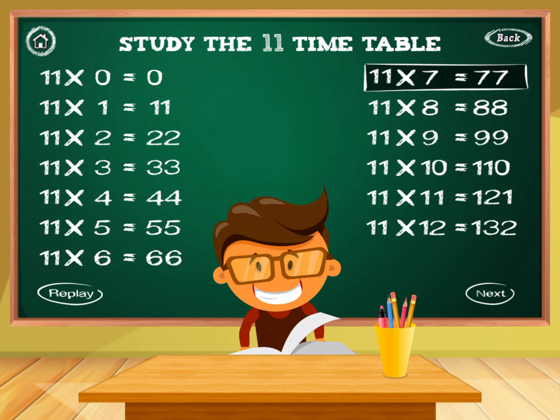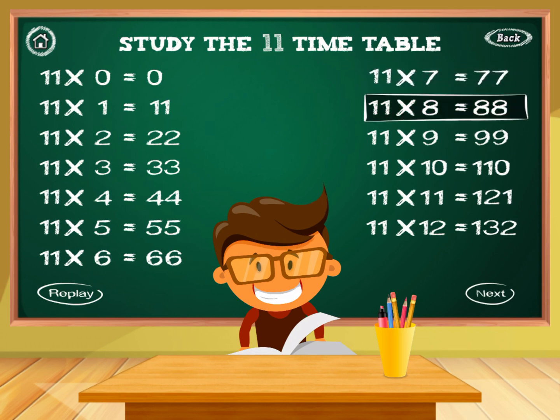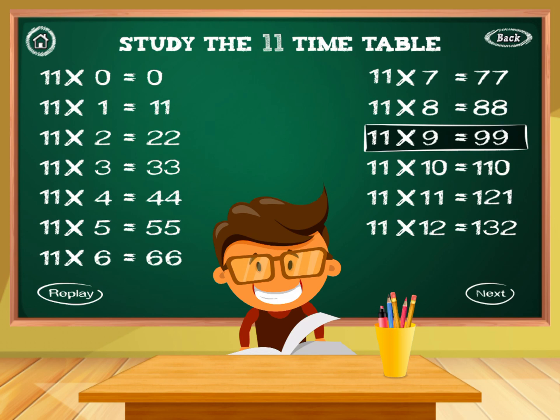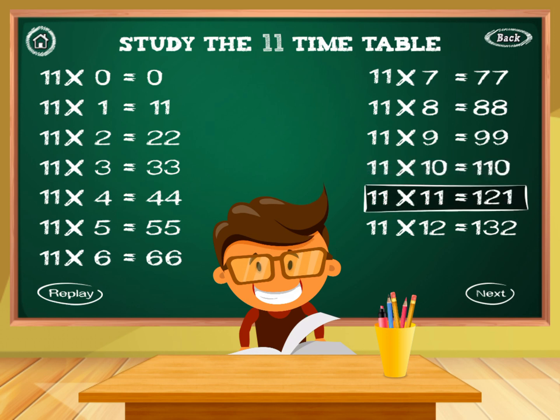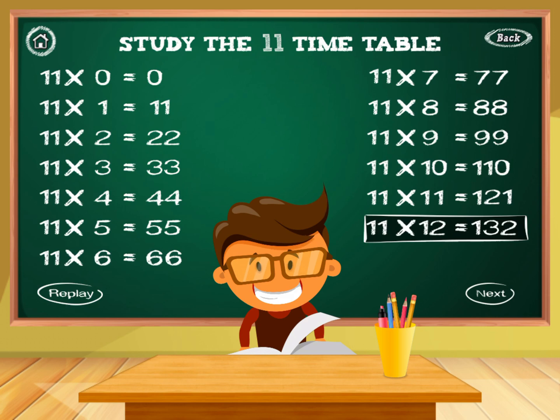11 times 7 equals 77. 11 times 8 equals 88. 11 times 9 equals 99. 11 times 10 equals 110. 11 times 11 equals 121. 11 times 12 equals 132.